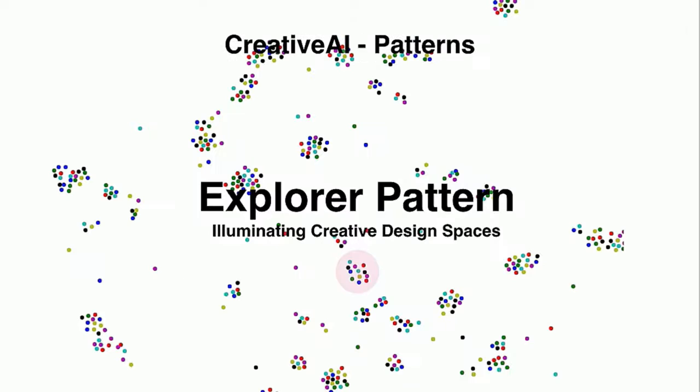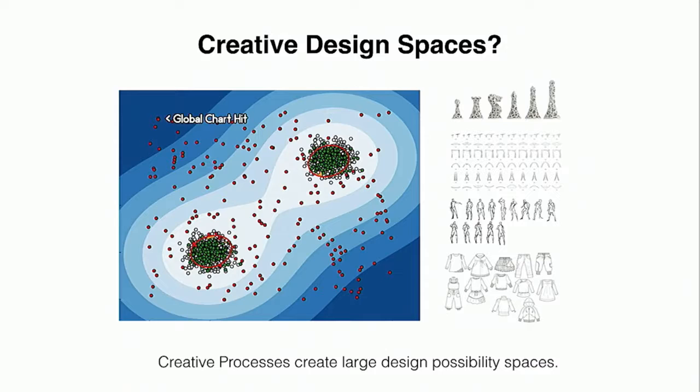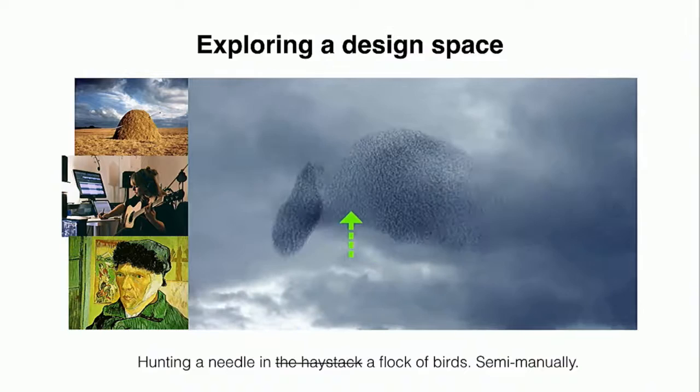The first one is the Explorer Pattern — illuminating creative design spaces with machine learning. As creatives, you might be familiar with this reality: you start with an empty page trying to do music, design, or illustration. You have this magic spark and you're supposed to come up with something fantastic. What you're really doing is probing a very large design space, a possibility space, in your head without assistance. Exploring this design space manually is not like hunting a needle in a haystack — it's hunting a needle in a moving flock of birds.